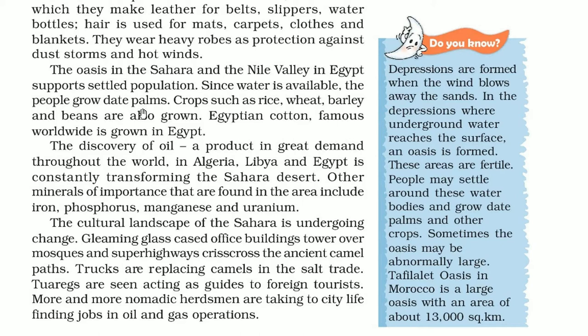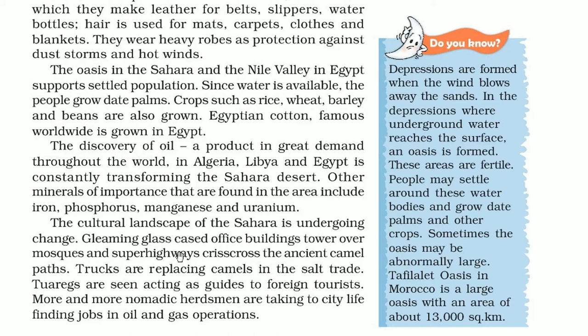The oasis in the Sahara and the Nile valley in Egypt support settled populations. Since water is available, people grow date palms, and crops like rice, wheat, barley and beans. Egyptian cotton, famous worldwide, is grown in Egypt. The discovery of oil in Algeria, Libya and Egypt is constantly transforming the desert. Other important minerals include iron, phosphorus, manganese and uranium. The cultural landscape of Sahara is changing - gleaming glass-cased office buildings tower over mosques and super highways crisscross the ancient camel paths.